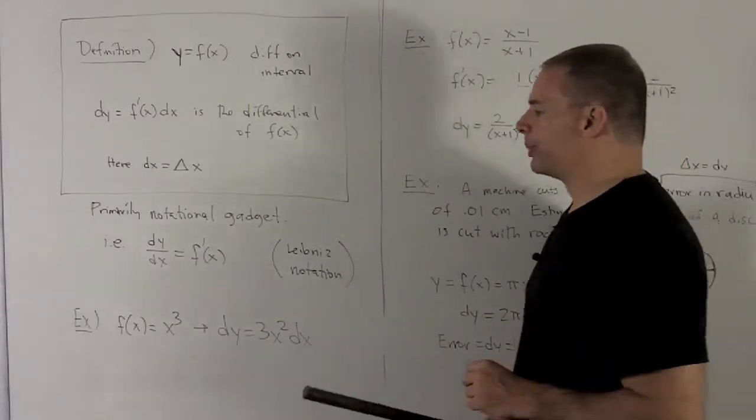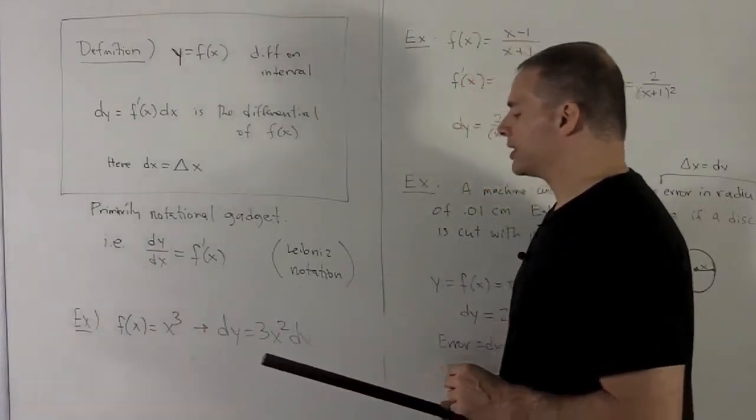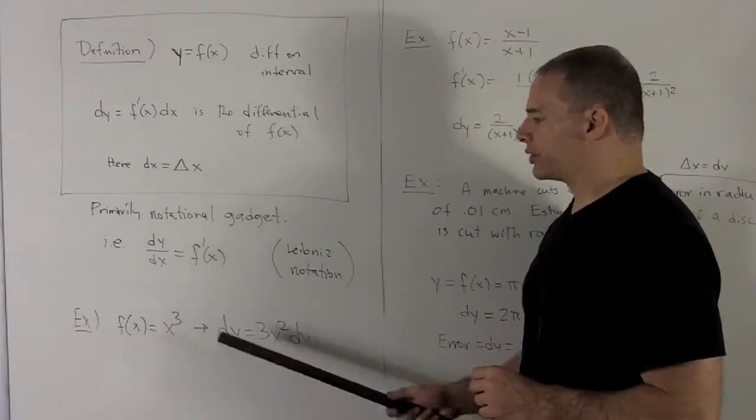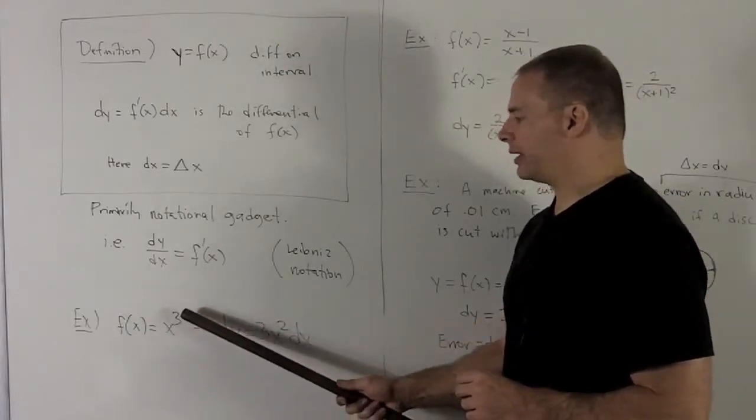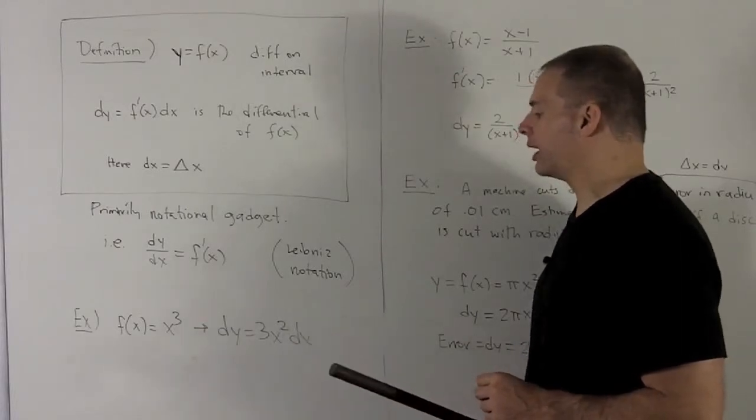Let's do a few examples. So we already had f(x) equal to x cubed. So in this case, dy is equal to, take the derivative of f, so it's going to be drop the 3 and then take 1 off the exponent. So 3x squared, and then we tack on a dx.